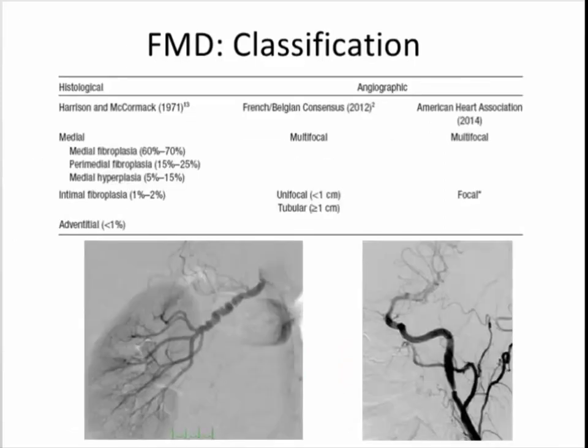More recently, because of improvements in imaging, it has been suggested that FMD be classified based on imaging appearance, since we don't often have histopathology on the involved arteries. Multifocal lesions refer to an artery that has diffuse changes throughout, while unifocal lesions are arteries with just one stenotic lesion. The unifocal type typically correlates with intimal lesions, while multifocal correlates with medial lesions — and by far, multifocal is the most common presentation of fibromuscular dysplasia.